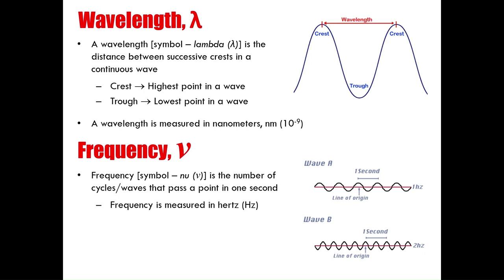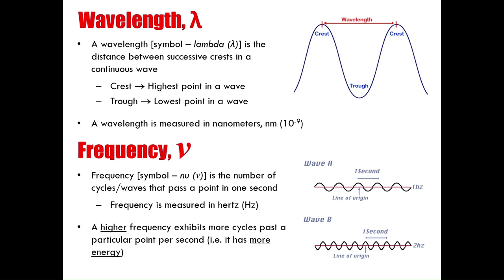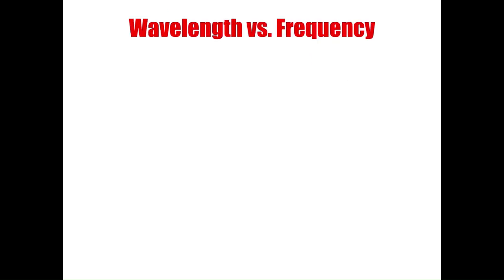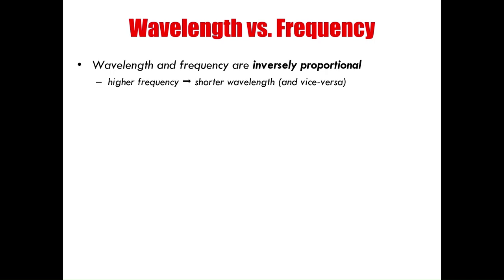Frequency is the number of cycles or waves that pass a point in one second. Wave A has one waveform per second, which is why it's associated with one Hertz. Wave B has two wavelengths in one second, giving it two Hertz. A higher frequency exhibits more cycles past a particular point per second — that's why higher frequency means more energy. Wavelength and frequency are inversely proportional: a higher frequency gives a shorter wavelength, and vice versa.